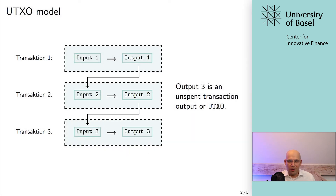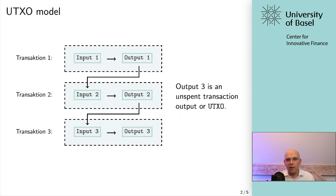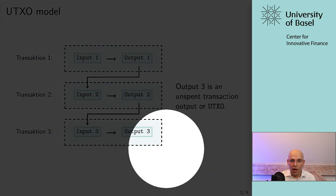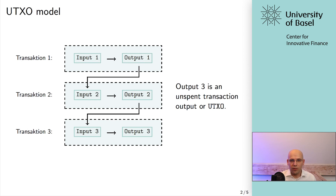Everything discussed earlier about names, addresses, or accounts was a simplification. In fact, that is how Bitcoin works — it uses the UTXO model. You have transactions that create new outputs, and you can reference these outputs exactly once, so obviously you cannot double-spend. In our example, output three is the only unspent transaction output at the current state. Output one has already been used, output two has already been used as input three, so only output three remains as an unspent transaction output.